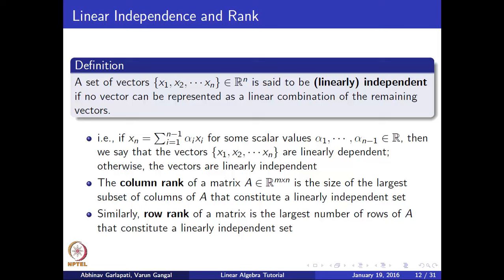Before defining linear independence, recall the definition of a linear combination. A set of vectors is linearly independent if no vector in the set can be produced using a linear combination of the other vectors in the set. The column rank of an m cross n matrix A is the size of the largest linearly independent subset of columns, where the columns are m cross 1 vectors. The row rank is defined similarly for rows.